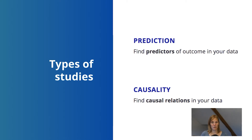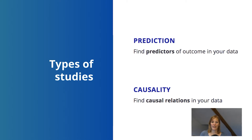So let's say you want to study whether smokers have a higher risk of lung cancer — that is an example of a causal study. However in predictive research it doesn't really matter whether the factors you're finding are causally related to the outcome.